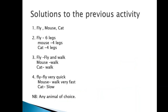Before we continue, let's quickly go through the solutions to the previous activity. Remember, this activity didn't really have specific answers, so you're supposed to have different answers because maybe everyone will find different animals. This is just an example of how you're supposed to answer it. My animals that I found were a fly, a mouse, and a cat.